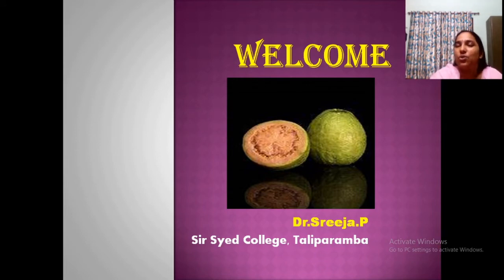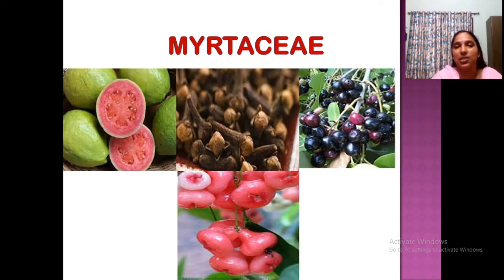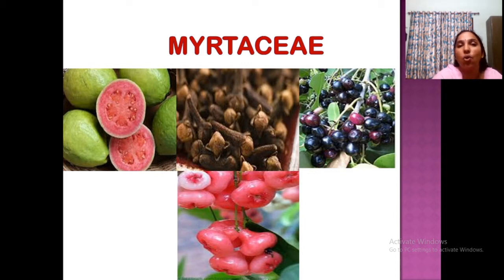Welcome back to the class on plant taxonomy. We are moving on to our next family. By looking at the picture you can identify which plant or fruit belongs to this family. This is a guava fruit that belongs to the family Myrtaceae. You can see familiar plants and fruits here: guava, navel, jambaka, pereka, nyareka, and clove (grambu). All these members belong to the family Myrtaceae.